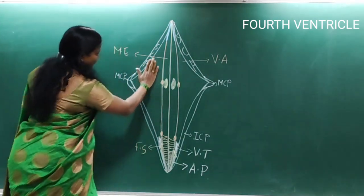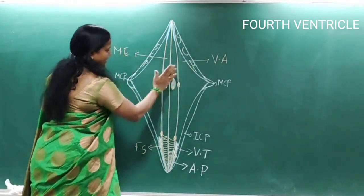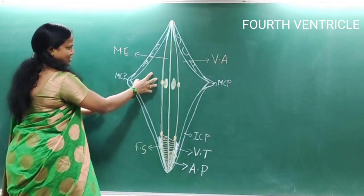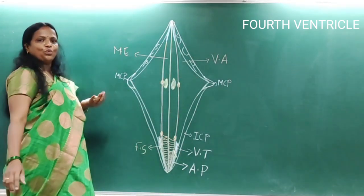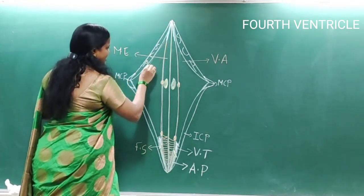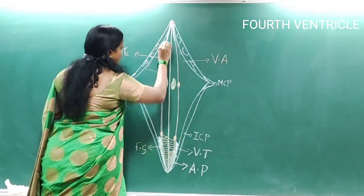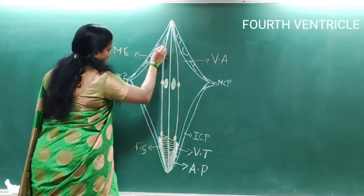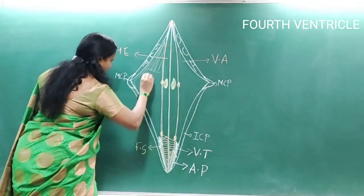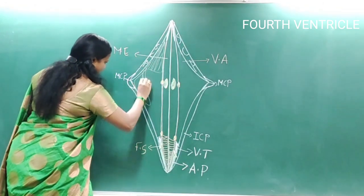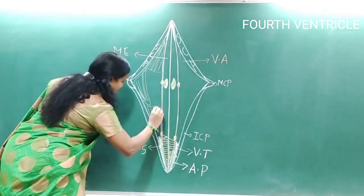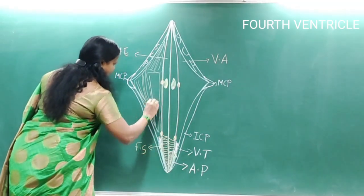The lateral area, that is lateral to the sulcus limitans, is the vestibular area, which presents a series of vestibular group of nuclei. These can be categorized as superior, lateral, inferior, and medial.